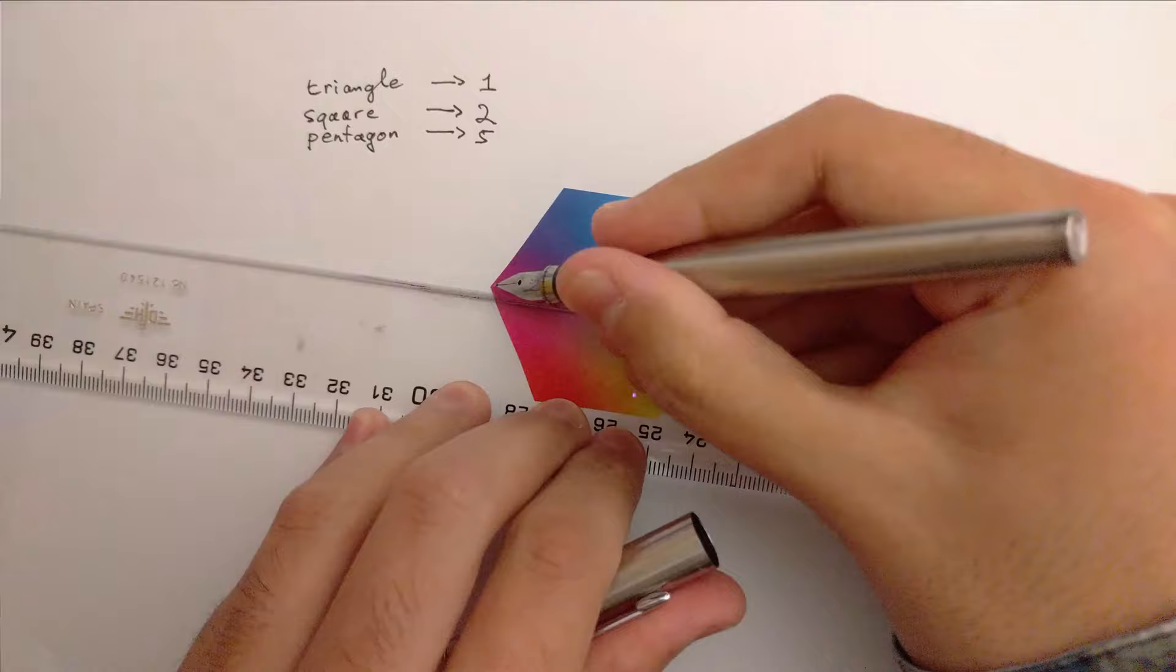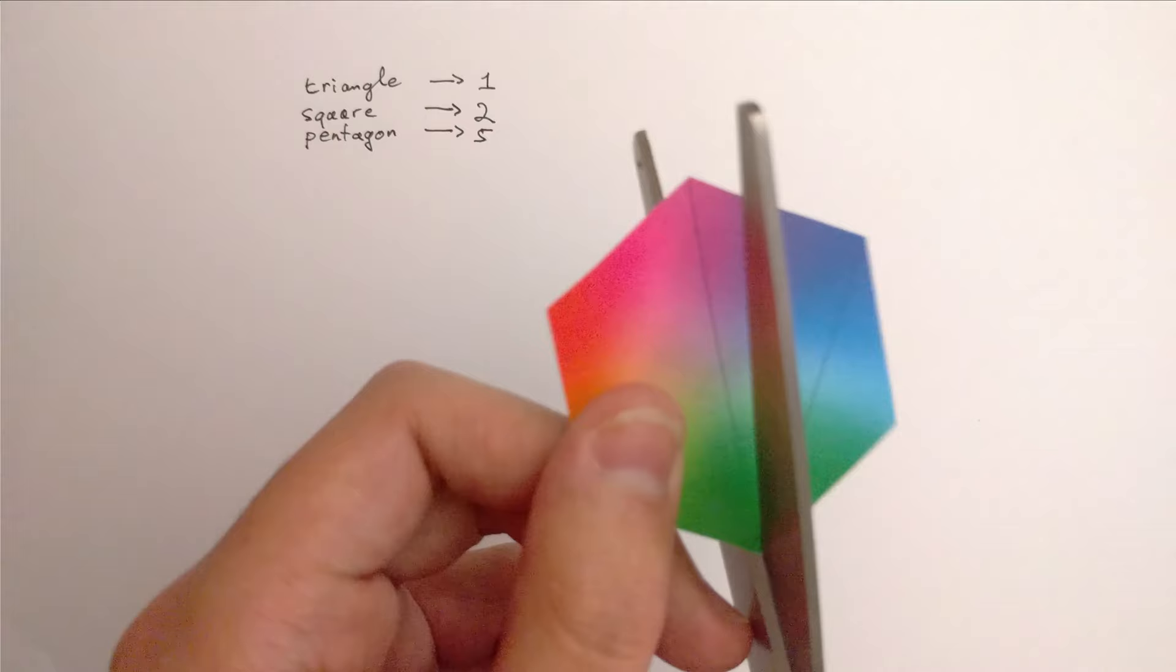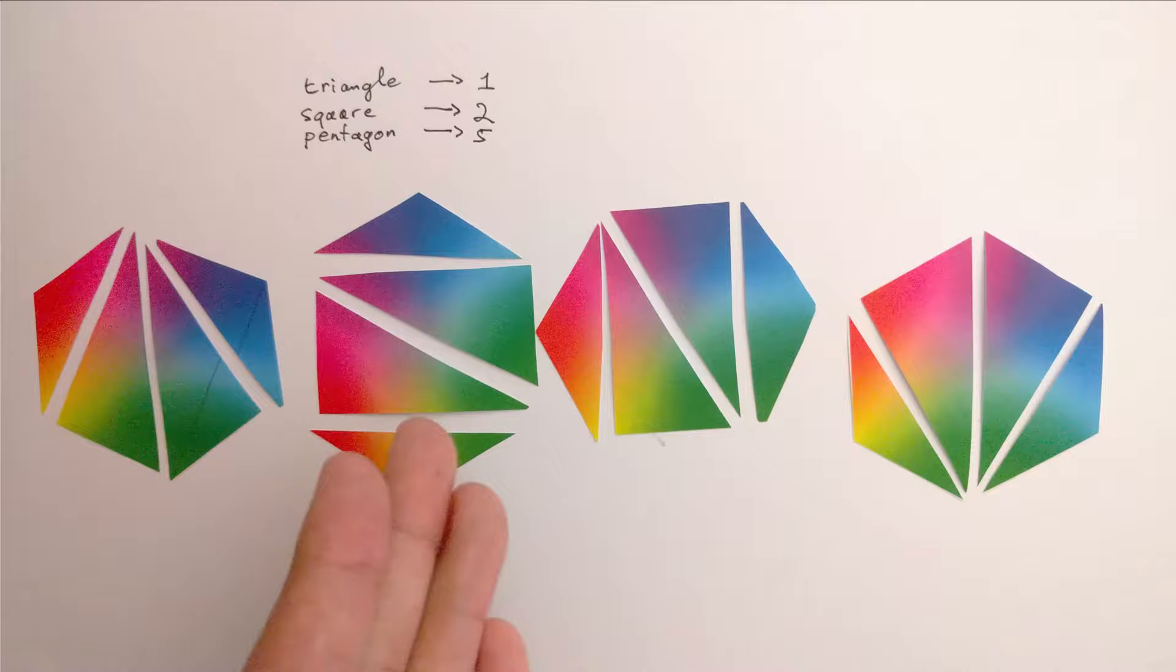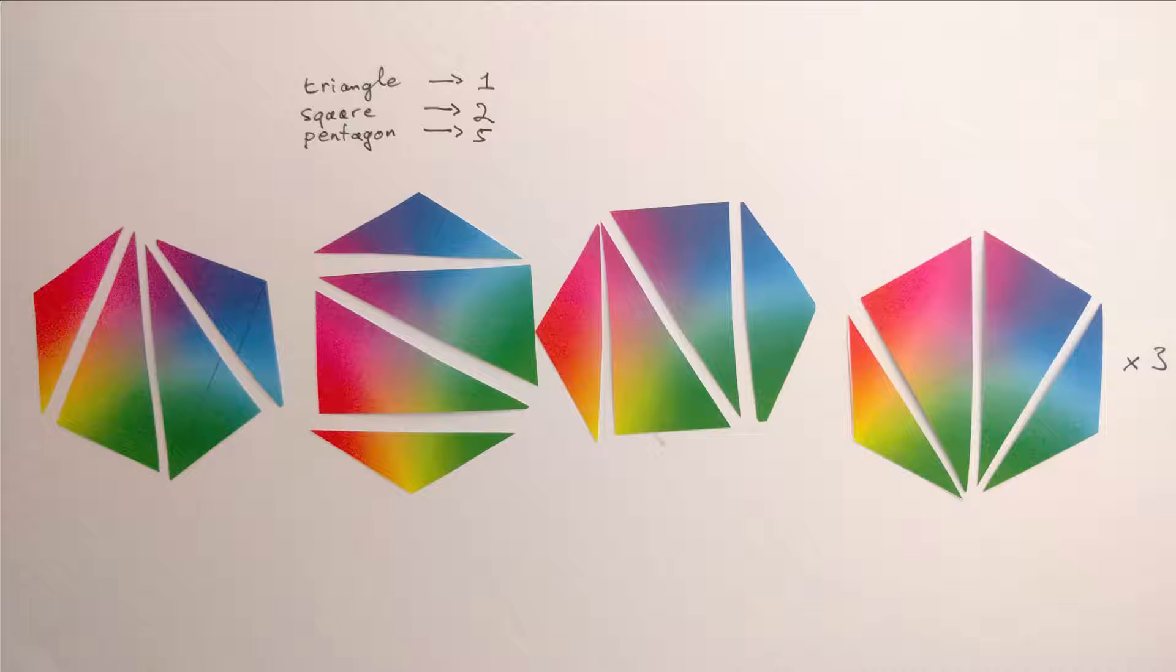For a hexagon, it's more complicated. There are two kinds of diagonals. If you cut one of the long diagonals, there are four ways to cut the rest. An arrow, an s, an n, and an arrow pointing the other way. There are three long diagonals, so we get three rotations of those.